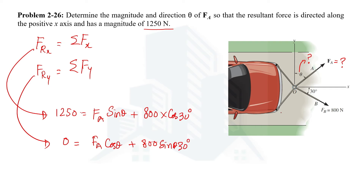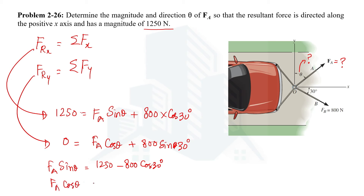The y-component of FA equals FA·cos(θ), and the y-component of the 800 N force is 800·sin(30°). To determine both θ and FA, we place FA·sin(θ) on one side and shift all other values to the other side. Similarly, we place FA·cos(θ) on one side, giving us FA·cos(θ) = −800·sin(30°). In these two equations FA is common, so we divide one equation by the other to cancel FA.